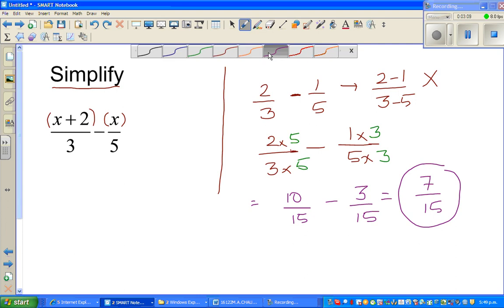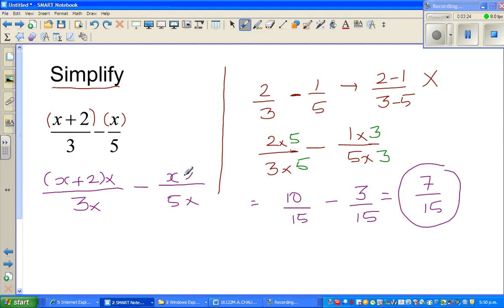Let me take this violet color. So I'm going to write like this: x plus 2 over 3 times something, minus x over 5 times something. What should I multiply?